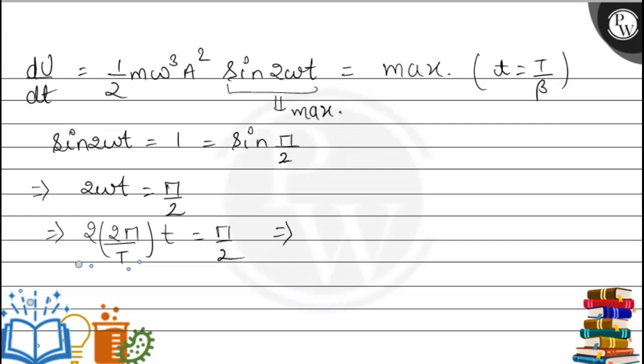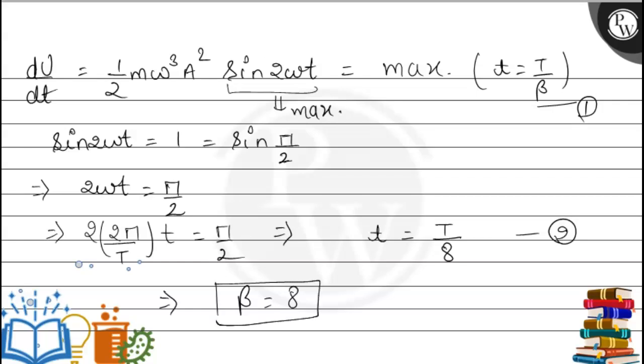From here, t becomes equal to T/8. This is our equation first and this is our equation second. Comparing equation first and second, β becomes equal to 8. So this is our required value of β and this is our final answer.